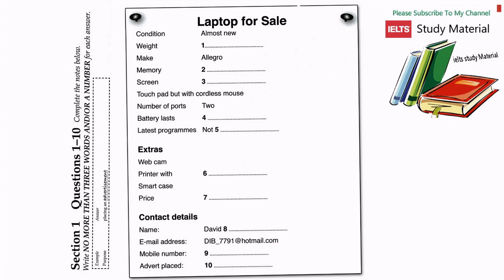Now listen and answer questions 6 to 10. Anything else I can put on the advertisement? There's a webcam built at the top of the screen and I can throw in a printer, scanner and headphones, which I got with it in a special deal. It also comes with its own case for carrying it around. Actually, the case is quite smart. I'm hoping these things will help it sell.